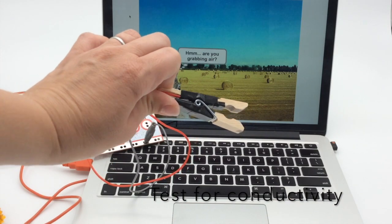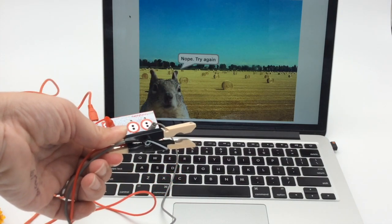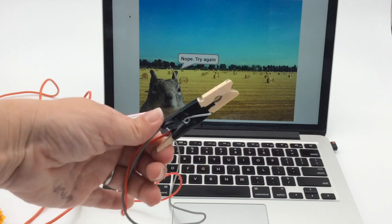Now you're ready to test items for conductivity. In this Scratch game I have the right arrow key being pressed to show something's conductive.